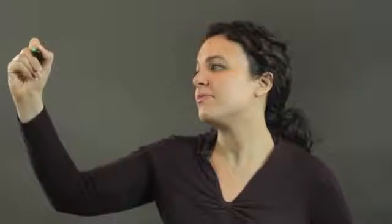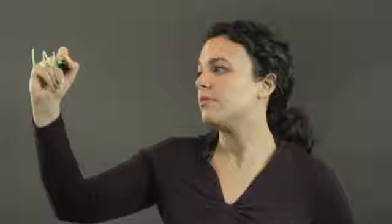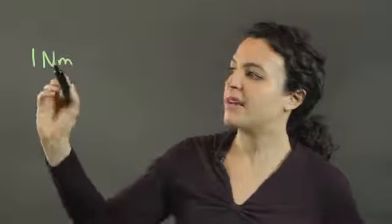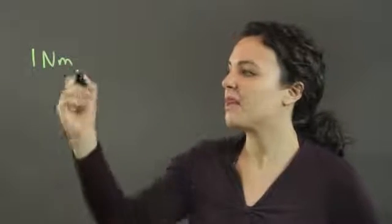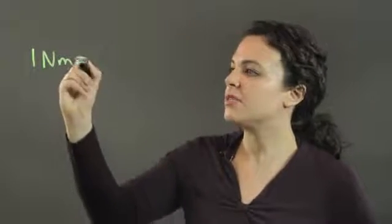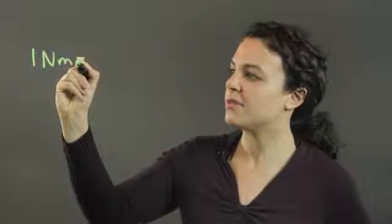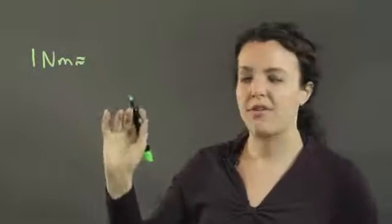So let's get started. One Newton meter—we write that as capital N and lowercase m—is equal to, well, it's roughly equal to, rounding a little bit here,